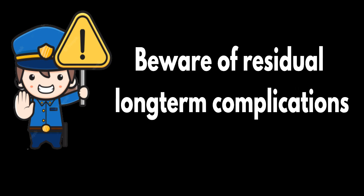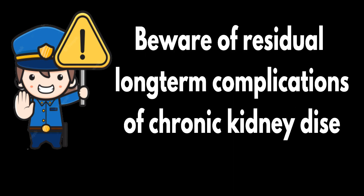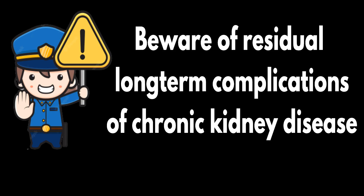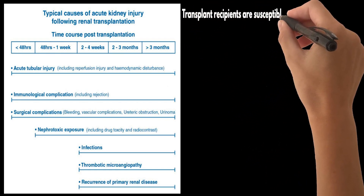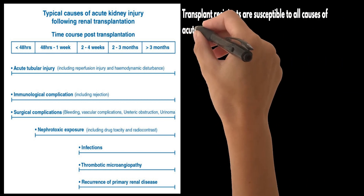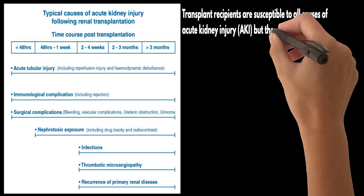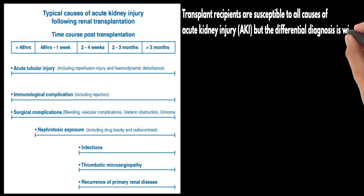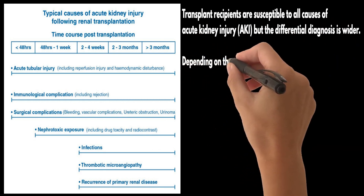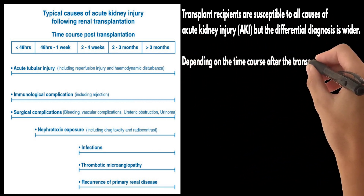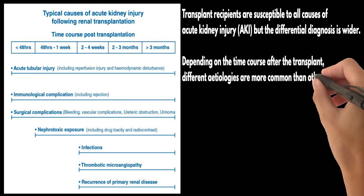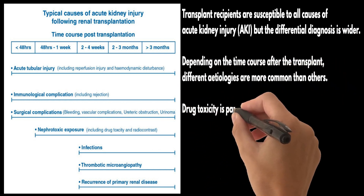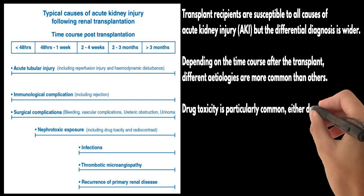Always beware of residual long-term complications of chronic kidney disease, as this may affect your patient's physiology in ICU. Transplant recipients are susceptible to all causes of acute kidney injury, but the differential diagnosis is wider and includes acute rejection, surgical and urological complications, side effects from immunosuppressive agents, and opportunistic infections. Depending on the time course after the transplant, different etiologies are more common than others, as shown in the figure.